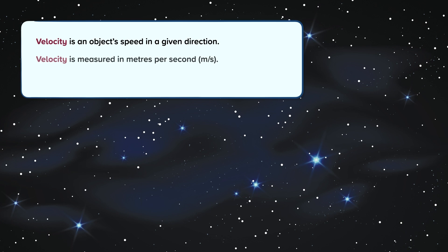Velocity is an object's speed in a given direction. Velocity is measured in metres per second. Velocity is a vector quantity, as it has a magnitude and a direction.